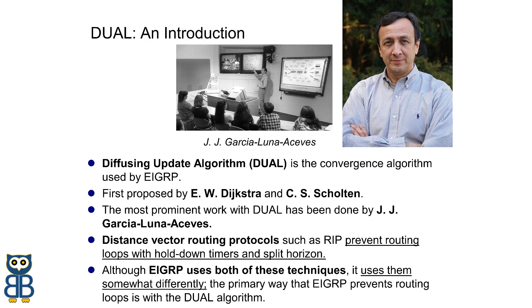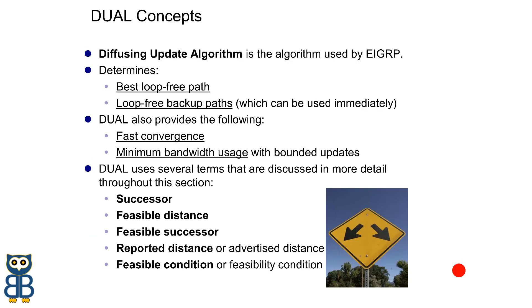When the router is working on the EIGRP protocol, the Diffusing Update Algorithm is a convergence mechanism system created to be used by the EIGRP protocol only. The full name of the Diffusing Update Algorithm is Dual Finite State Machine. DUAL works when the main path selected by EIGRP goes down, or when it is required to select another path. The DUAL algorithm helps to select the best alternative path for the router.